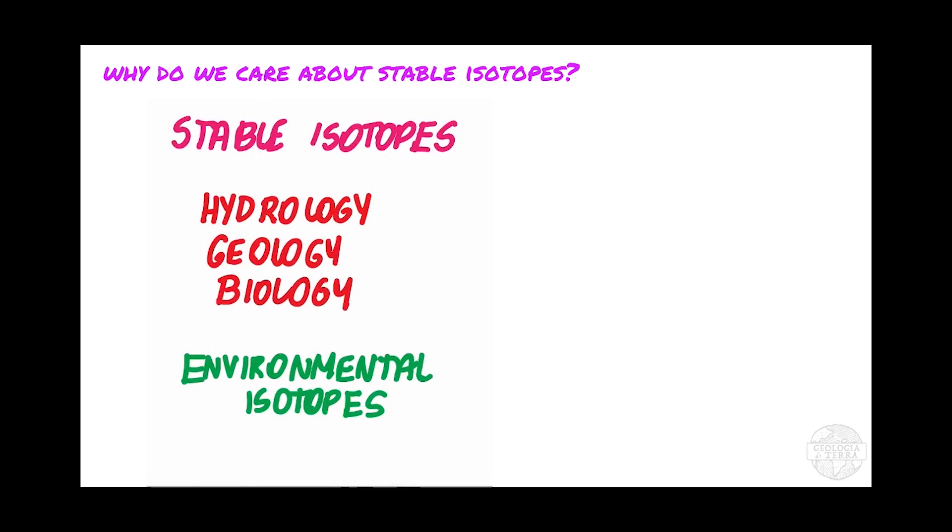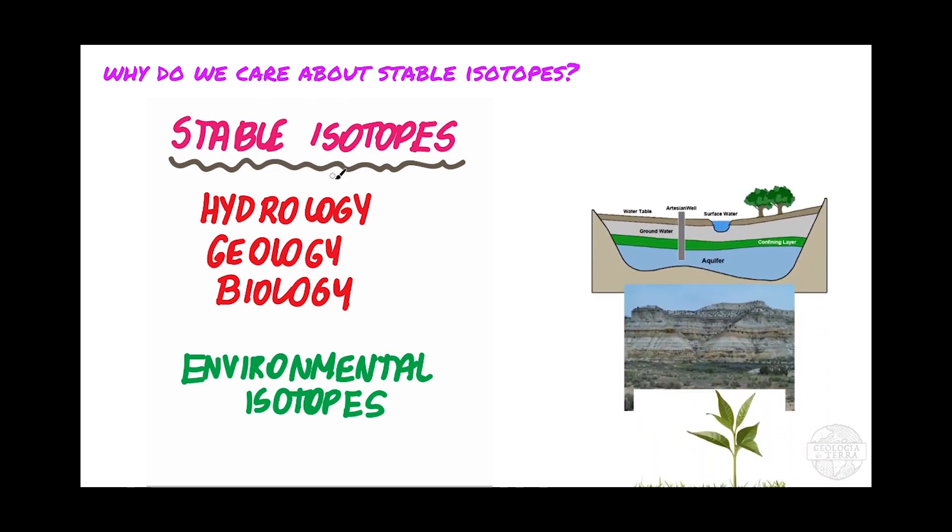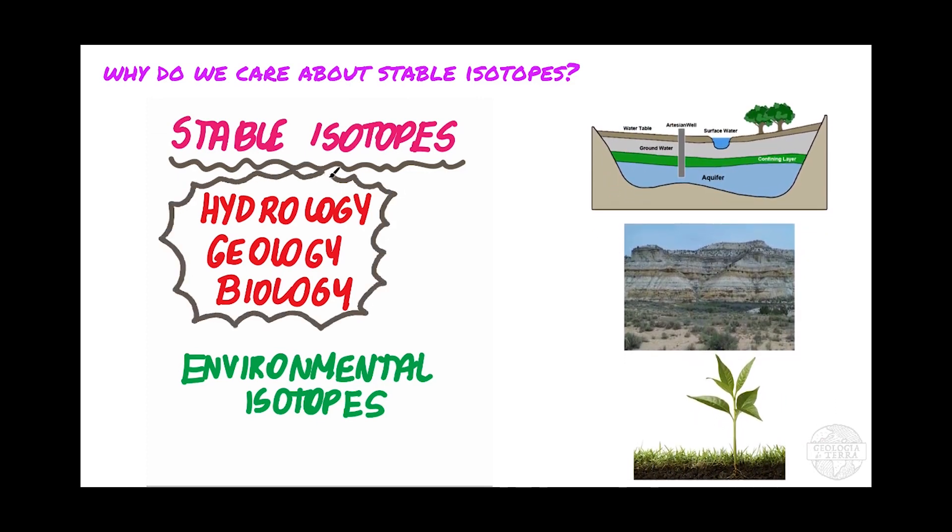In this series of videos, we will focus our attention on the stable isotopes. Some of these stable isotopes that are naturally occurring and found in abundance in our environment are the principal elements of hydrological, geological, and biological cycles. These are called environmental isotopes: hydrogen, carbon, nitrogen, oxygen, and sulfur.